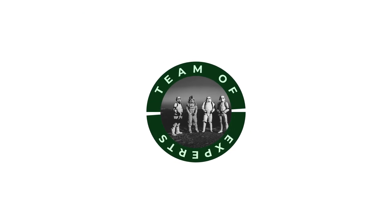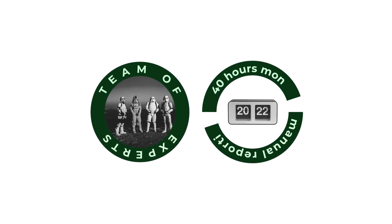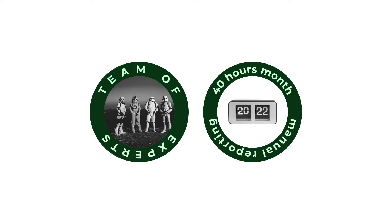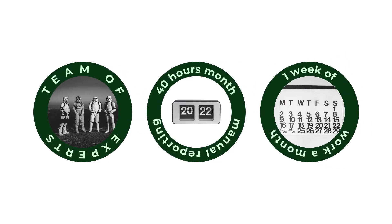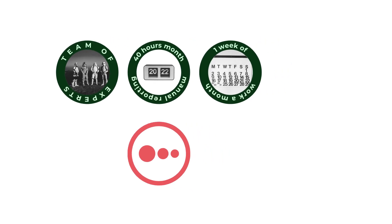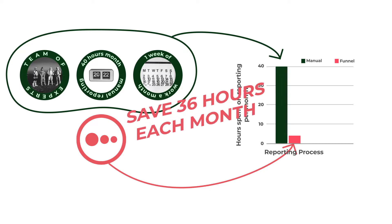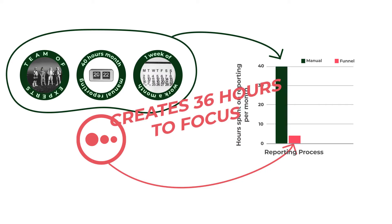Say instead: 'Our team of expert marketers were hired to take this brand to the next level. Together, we currently spend 40 hours a month on manual reporting — that's one week's worth of work a month as a team. If we were to implement a free tool like Funnel to automate our reporting process, we could cut that time down to four hours a month instead of 40. Not only does that save us 36 hours collectively each month on manual tasks, but it gives us the opportunity to focus that time on marketing campaigns that we currently don't have time for due to the time we spend on manual reporting.'